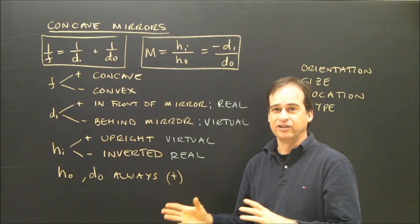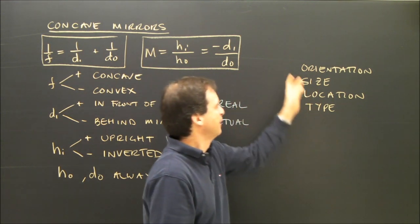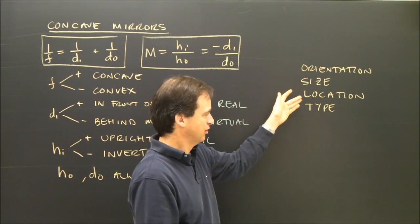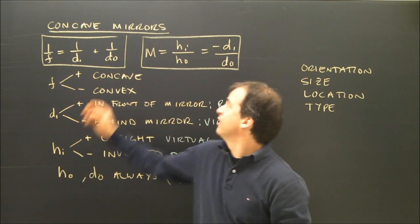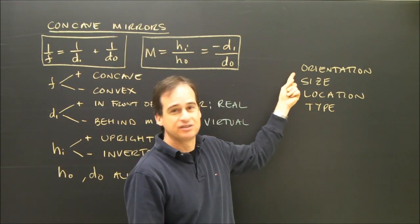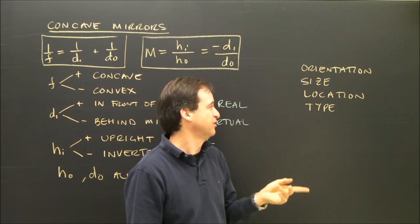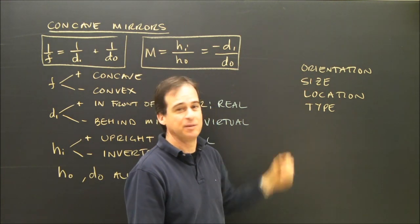Now that we know what the variables look like in a diagram, we need a sign convention because we're interested in knowing the orientation, the size, the location, the type, and the magnification. From numbers, we need some way of knowing if its orientation is upright or inverted. This is where the sign comes in, the positive and negative. It'll also tell us what type it is and location.